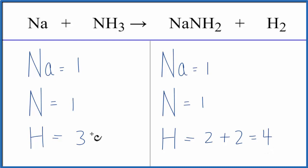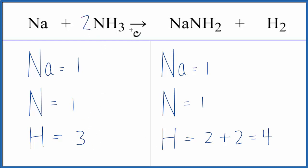When I have an odd number like this, and then an even number here, it's often helpful to get this to be an even number. So if we put a coefficient of two, three times two would give us six. So that might help us out.